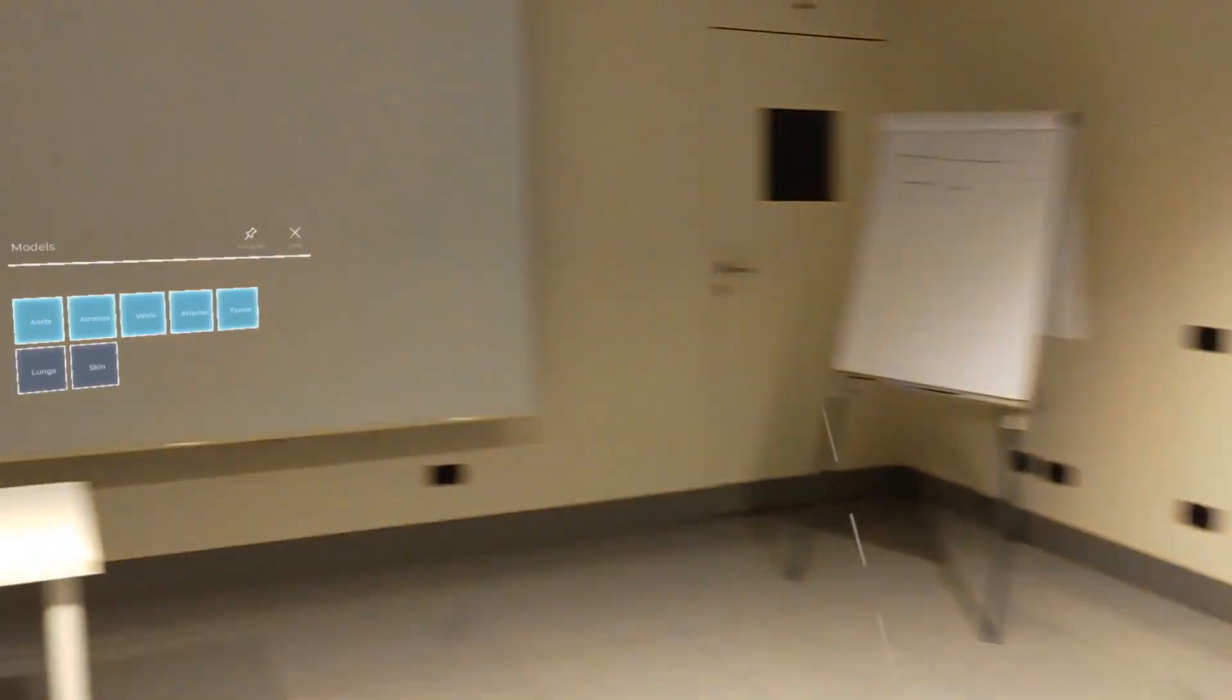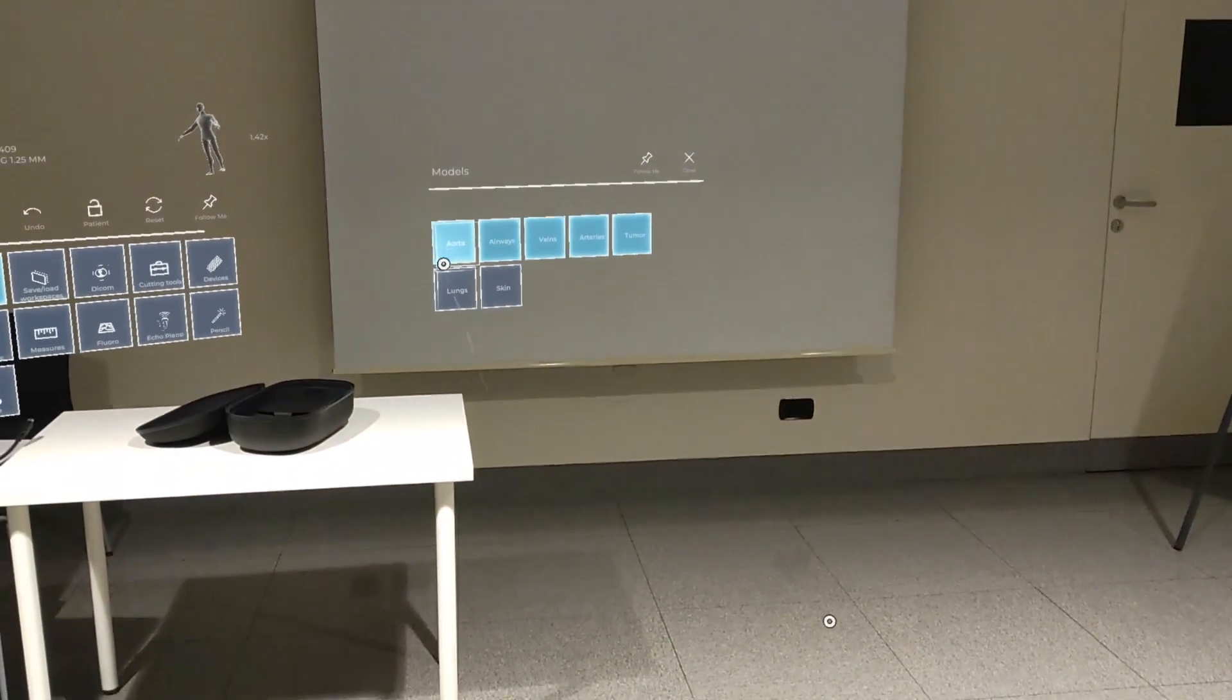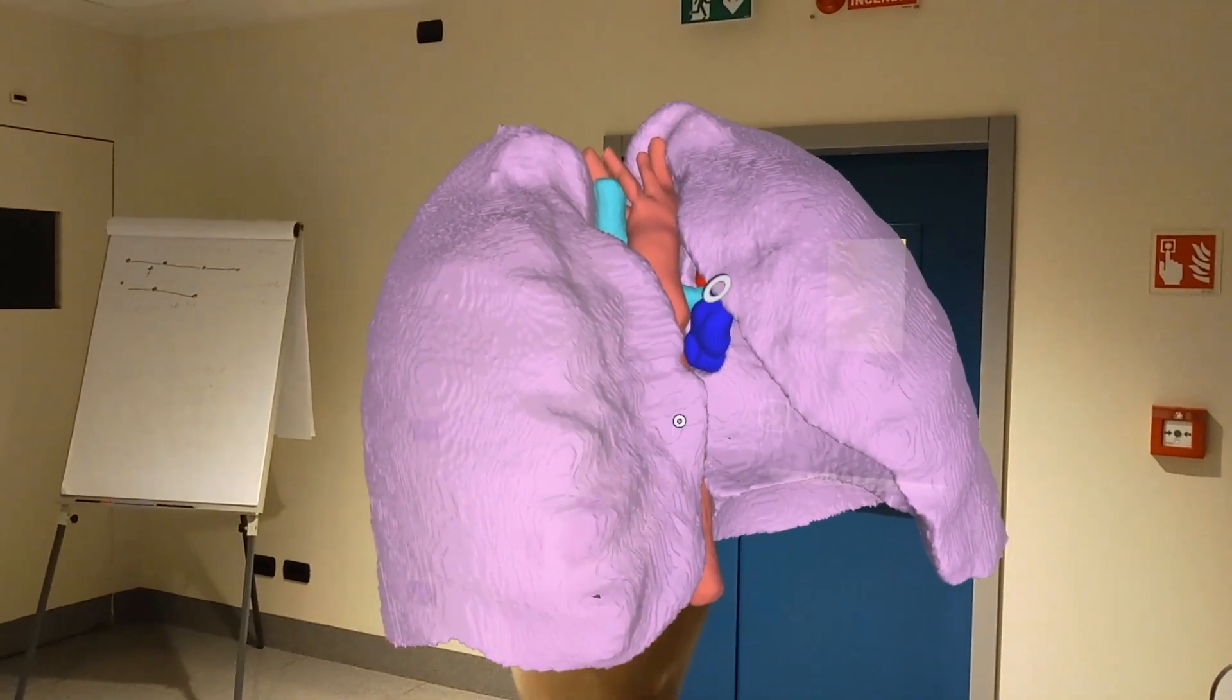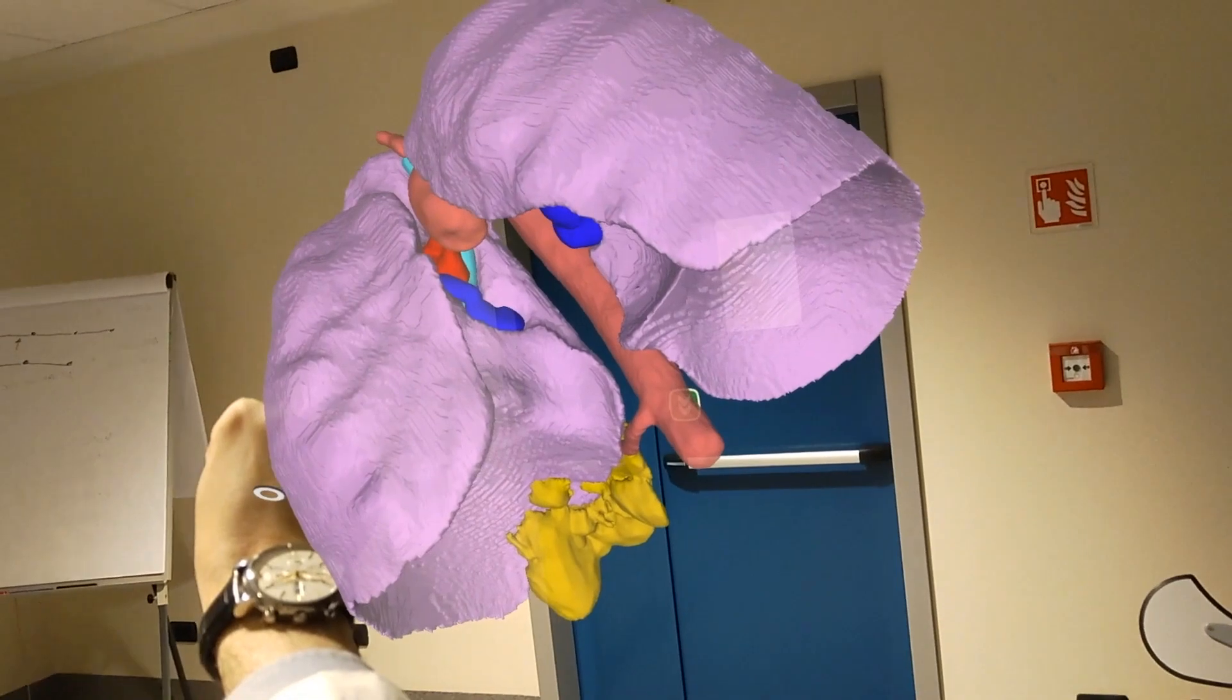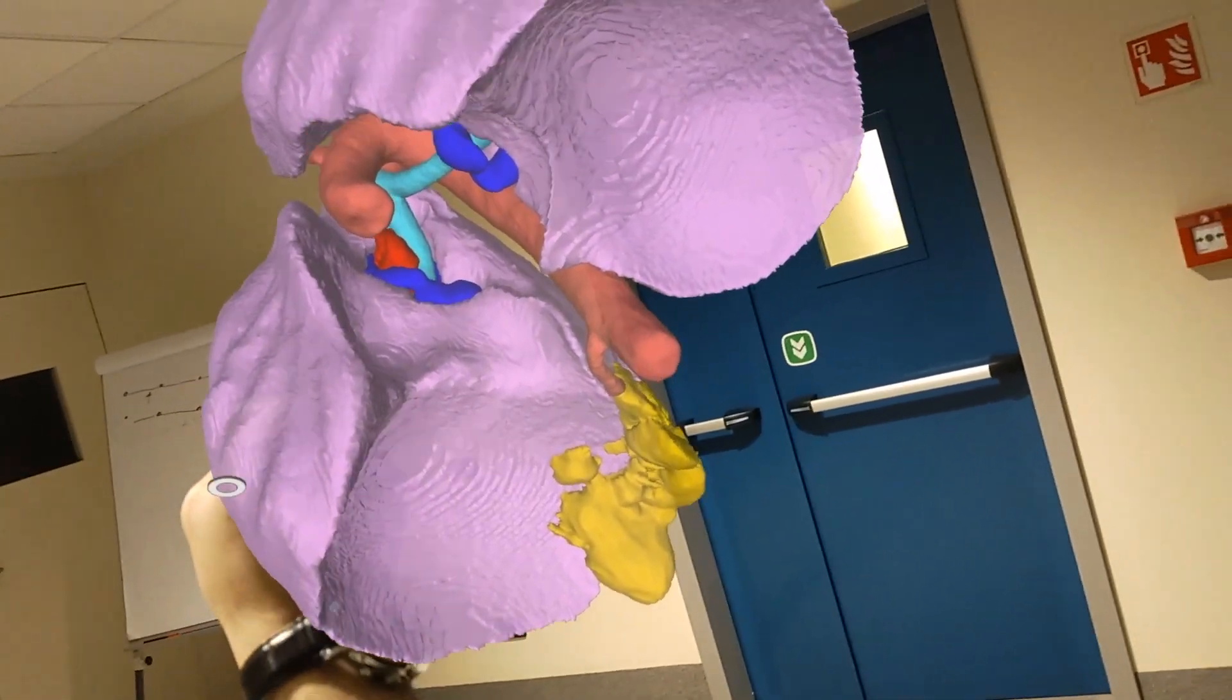We then introduce the pulmonary inflated parenchyma to clearly visualize the sequestration within the lobe, and thanks to complete rotation of the model, we can have a dedicated view from the basis of the lung.